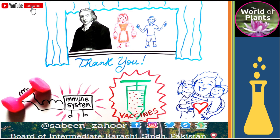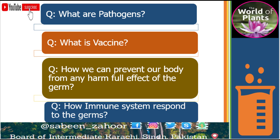Training our immune system provides future protection. Due to the development of vaccines, diseases such as polio, measles, mumps, chickenpox, and rubella are now preventable. These old childhood diseases can now be prevented by using vaccines before the disease strikes. Vaccines can be used to prevent the body from any pathogenic, parasitic, viral, or bacterial infection. Pathogens are microscopic living organisms which are able to cause diseases in the human body.